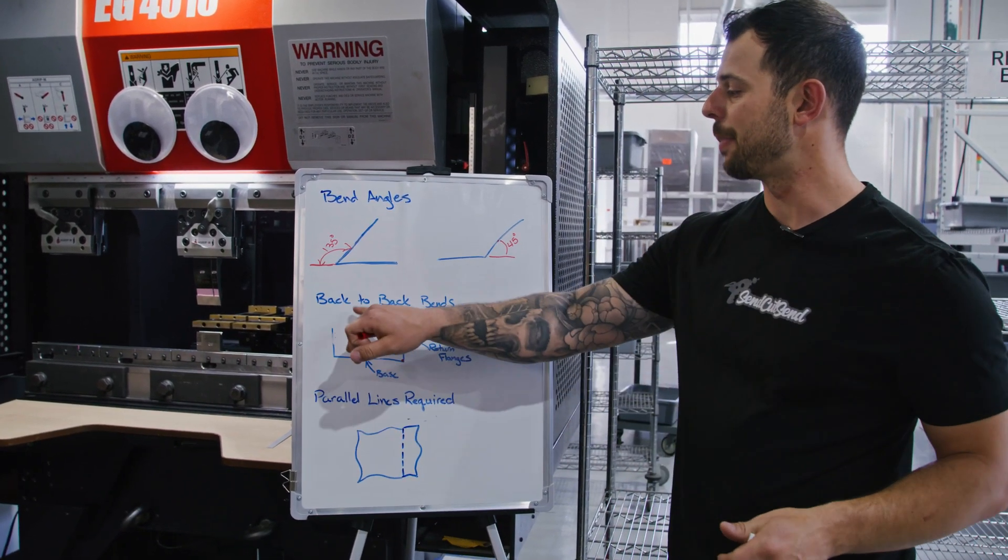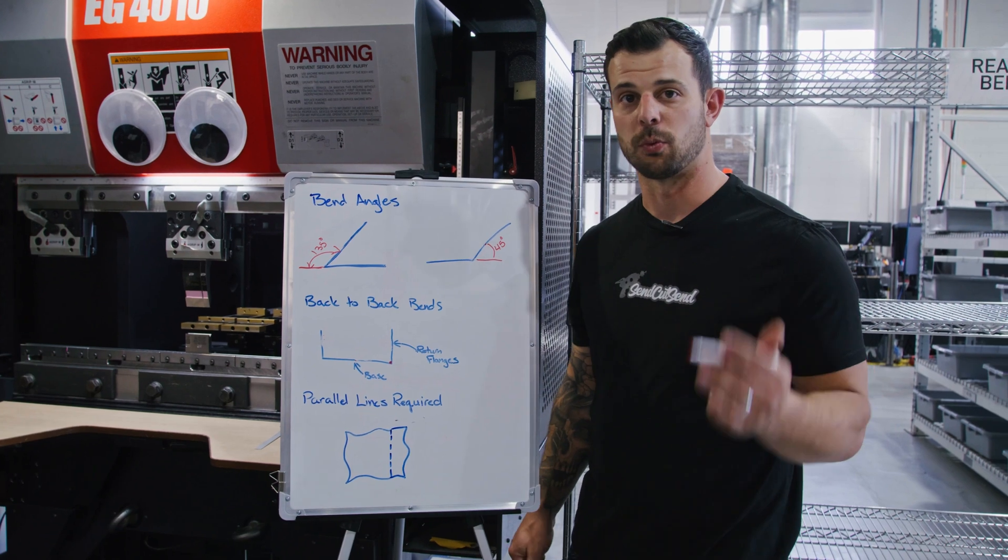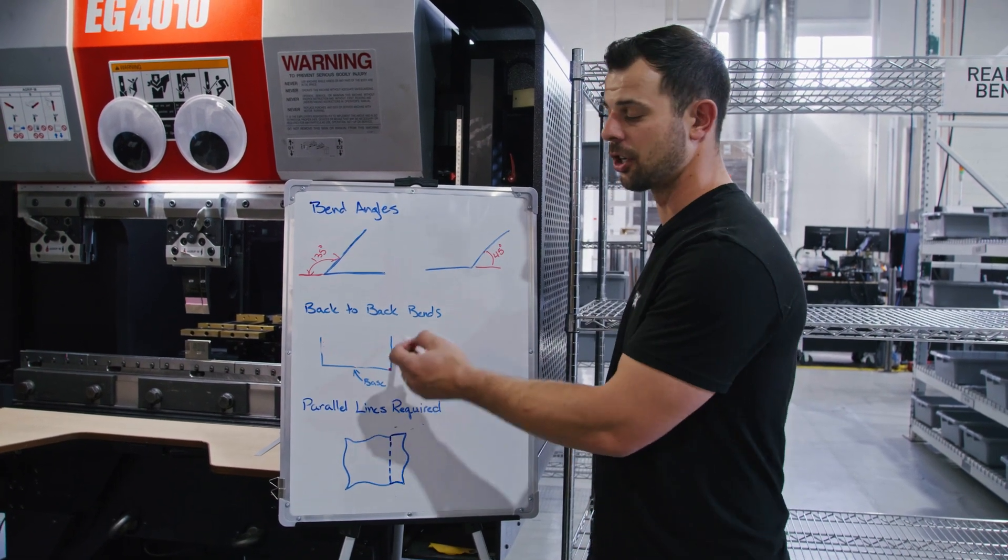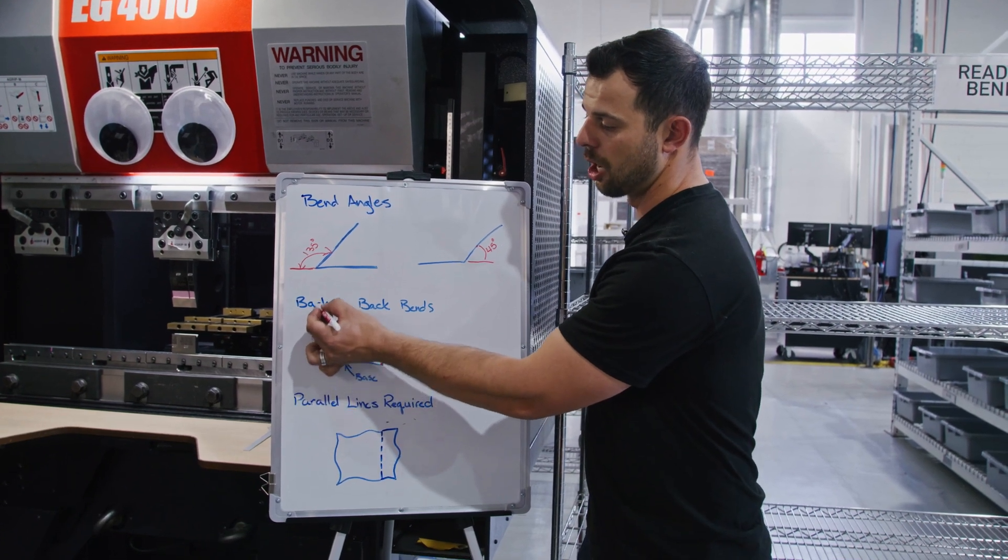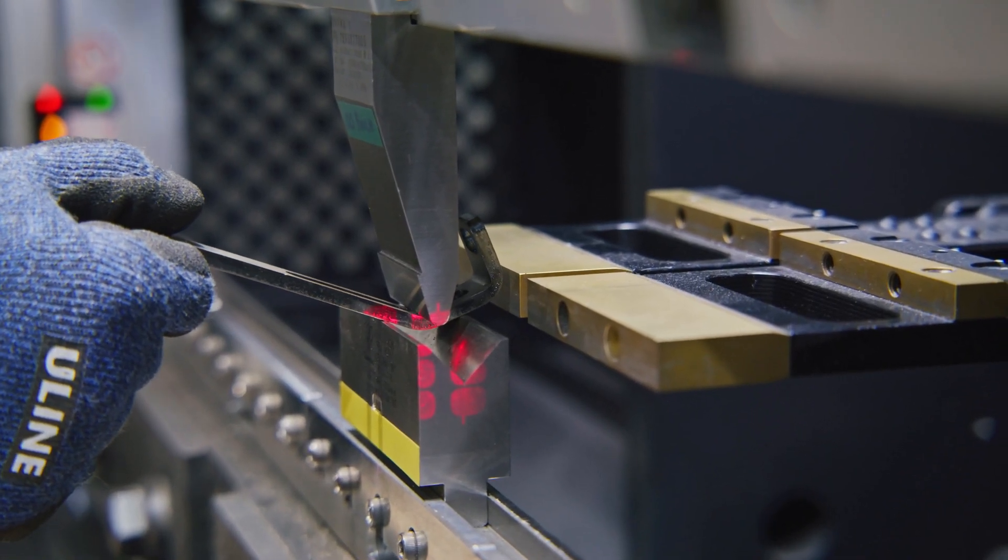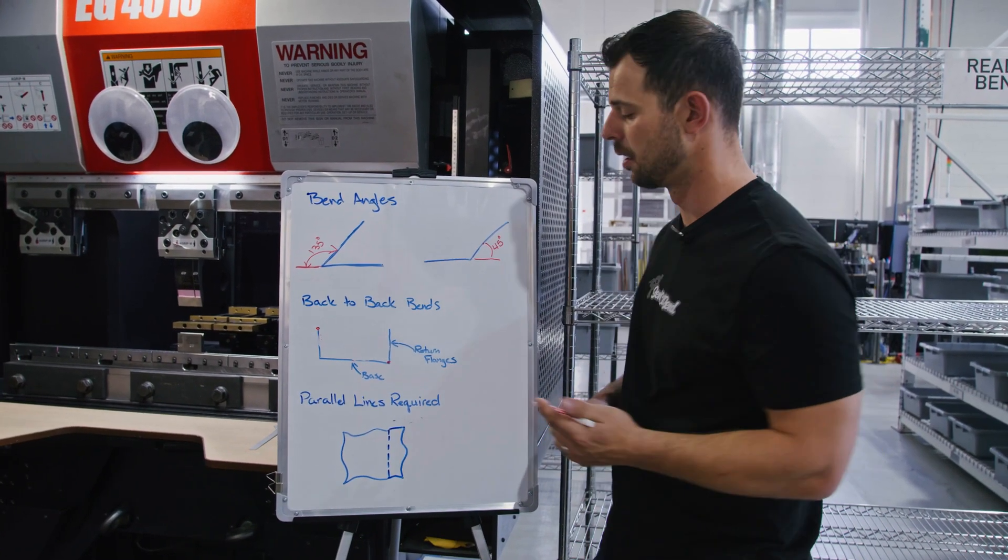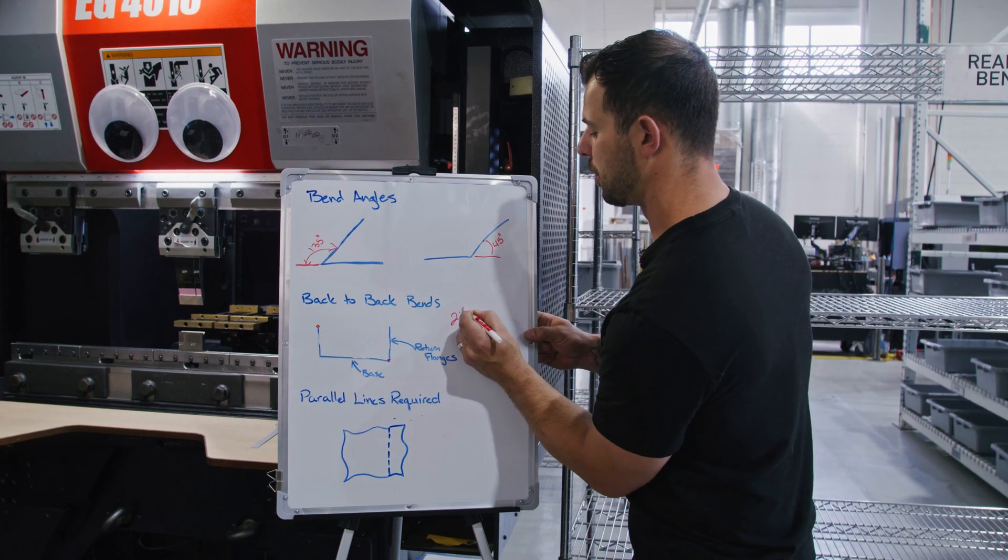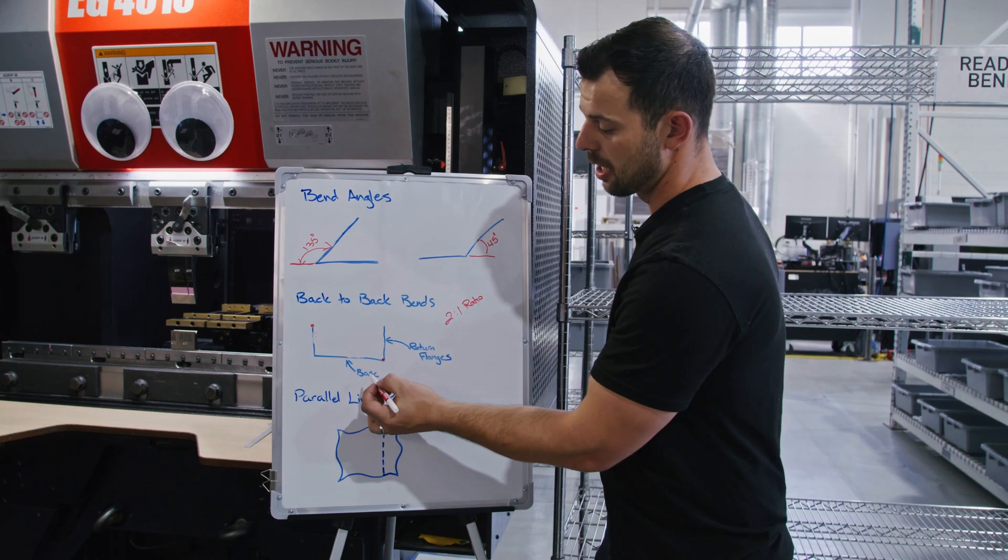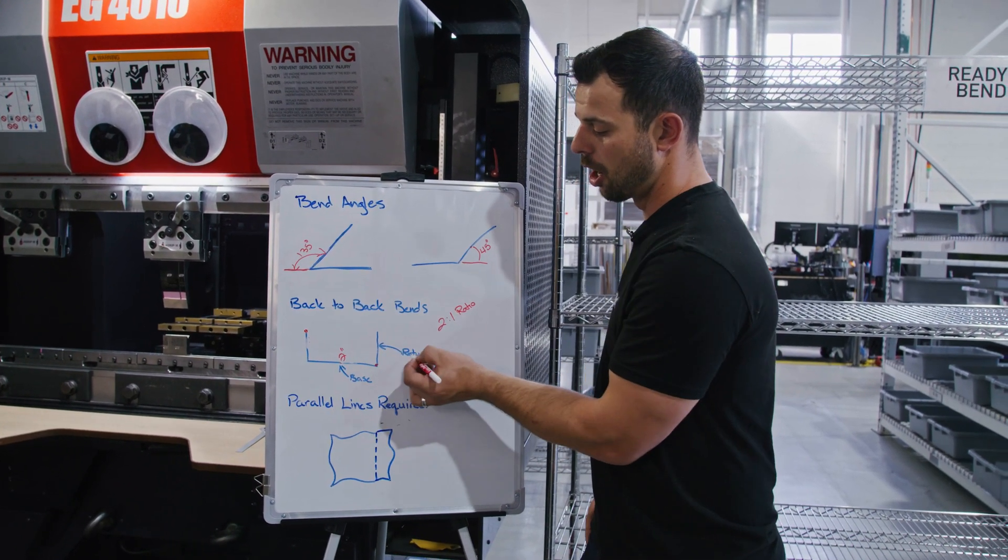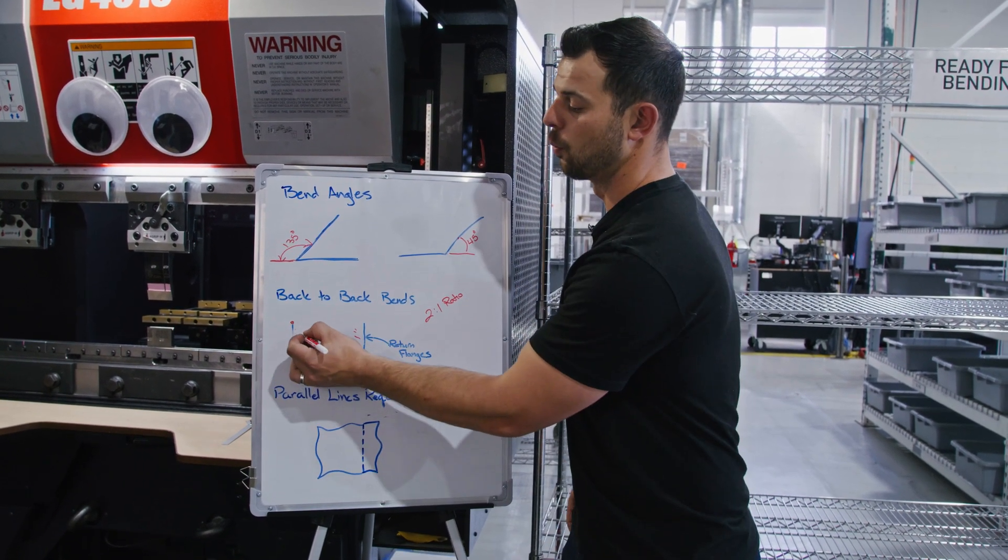Next, let's look if we have a back-to-back bend situation, such as a U-channel like this. More importantly, we want to talk about the ratio between the base and the two return flanges. So if we don't have enough space, if we have too long of a return flange, we can contact the punch in this corner as we're bending this one. So a safe return ratio is a two to one. We'll put that down here, two to one ratio. That being said, if we have a base flange that is two inches, our maximum return flange angles or flange lengths are going to be one inch.